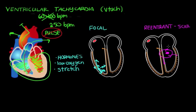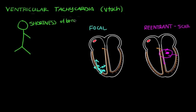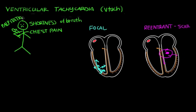Both irritated cells and scar tissue formation make the ventricles fire at a rapid rate. Someone experiencing VTAC will have signs and symptoms similar to other diseases with rapid heart rates. Since the heart isn't circulating adequate oxygenated blood, a person might have shortness of breath, chest pain because the heart itself isn't getting enough oxygenated blood, or palpitations — the sensation that the heart is beating out of the chest wall, like a drum.